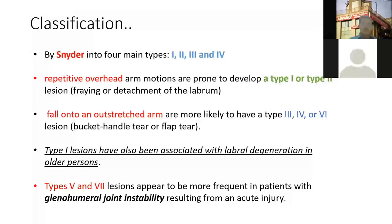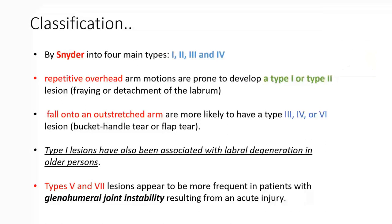Snyder has classified SLAP tears into types 1, 2, 3, and 4, with others added. These four types are very important and commonly seen in regular practice. Repetitive overload most commonly causes type 1 and type 2; fall onto outstretched hand causes types 3, 4, and 6. Types 5 and 7 are more commonly seen in joint instability — they are not primary pathologies but associated with other shoulder pathologies.